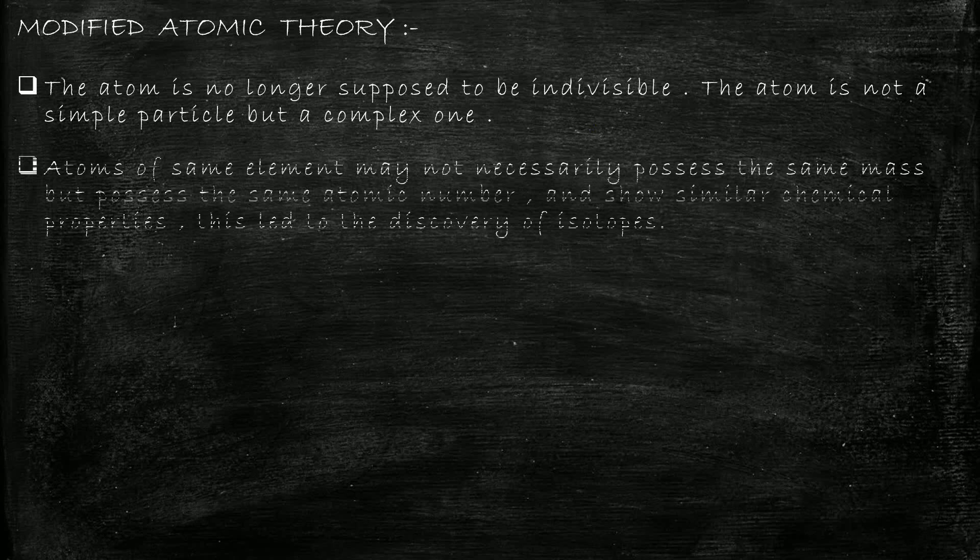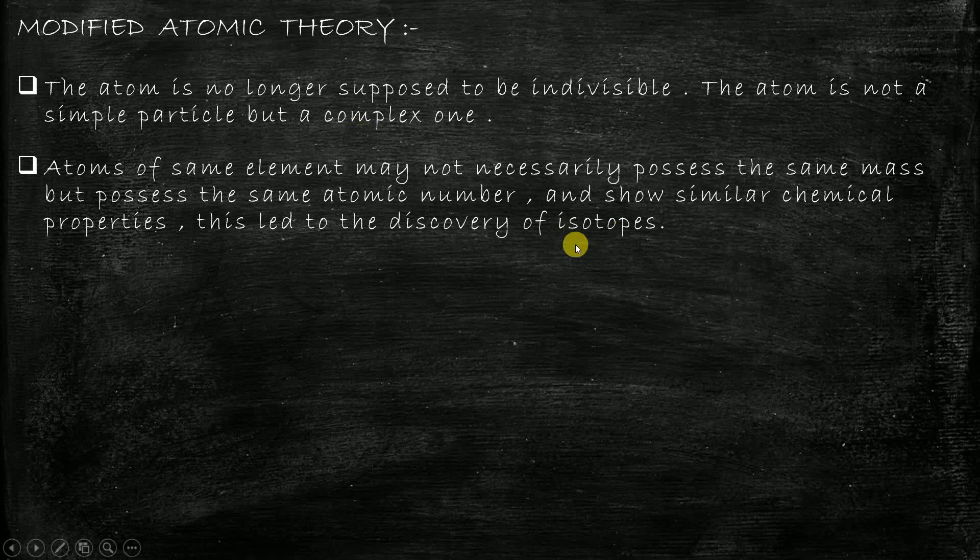The next point states that atoms of the same element may not necessarily possess the same mass but possess the same atomic number and so similar chemical properties. This led to the discovery of isotopes. Don't worry, I'll explain what isotopes are. Now see, carbon is present in three forms.